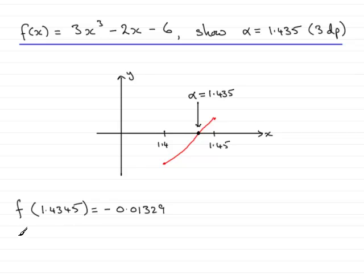And if we substitute the upper bound, that's f(1.4355), 1.4355, substitute that in, you find that you get 0.003233.